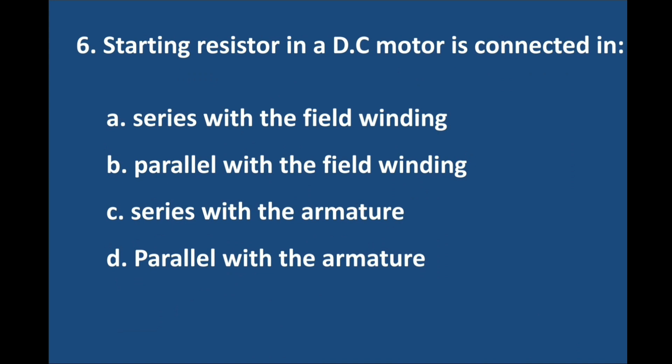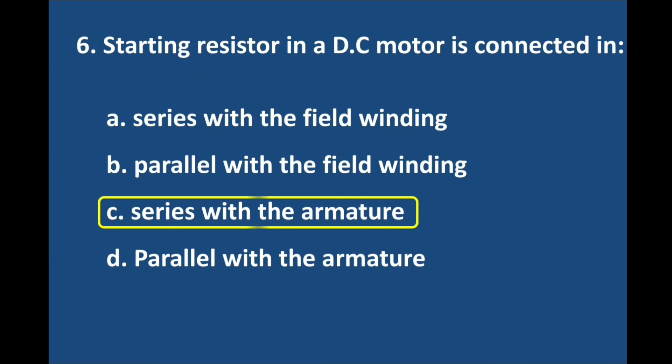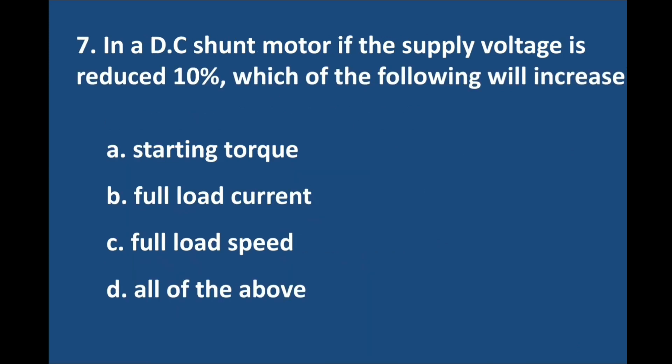Question number 6. Starting resistor in a DC motor is connected in — answer is option C: series with the armature. Question number 7. In a DC shunt motor, if the supply voltage is reduced 10%, which of the following tests will increase? Answer is option C: Full load speed.